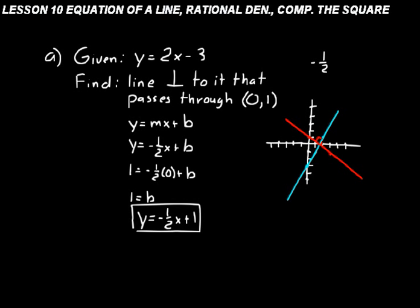Remember: parallel lines have the same slope, and perpendicular lines have slopes that are negative reciprocals of each other. Every time you need to find the equation of a line, write down the standard form first, find your slope, then find your y-intercept, and you're done.